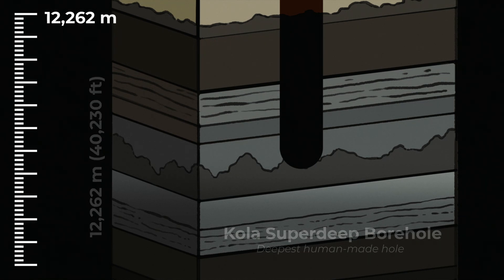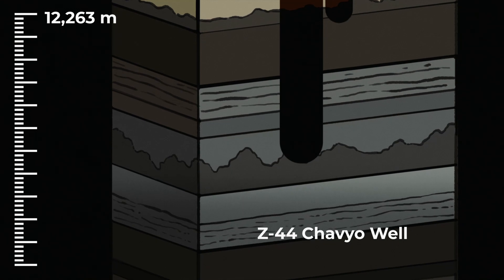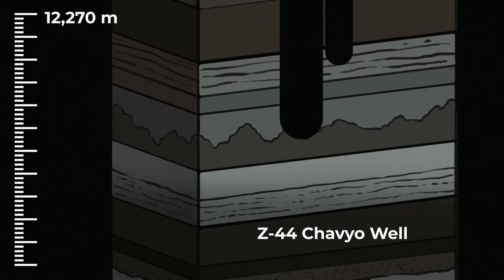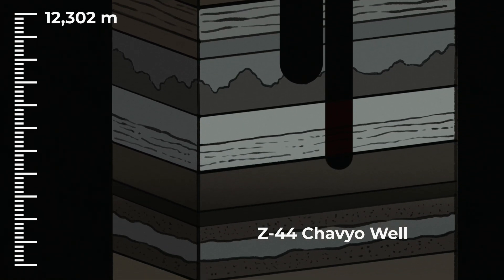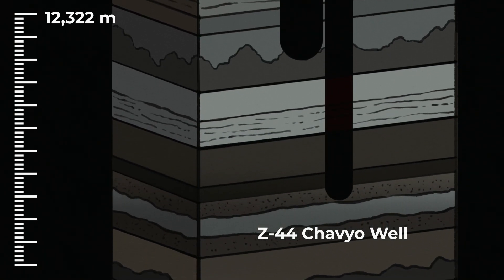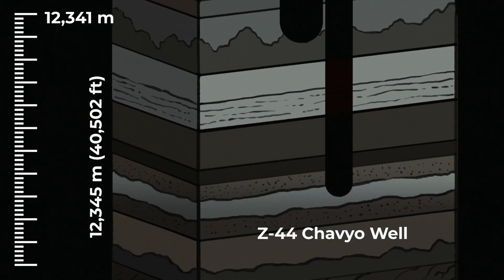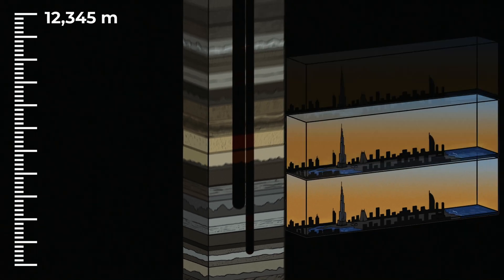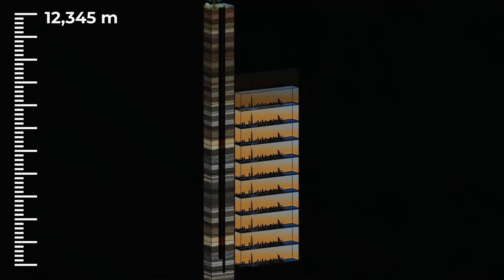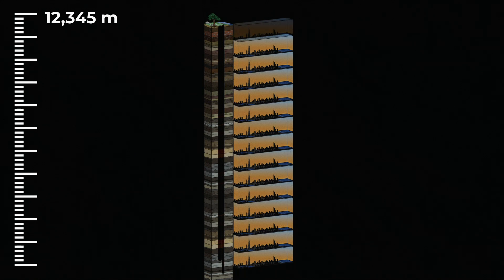However, in 2012, the Z44 Shavio well was completed by the oil and gas company Exxon and it became the deepest well on earth. It is 12,345 meters or 40,502 feet and it would fit about 15 of the Burj Khalifa buildings stacked on top of each other.